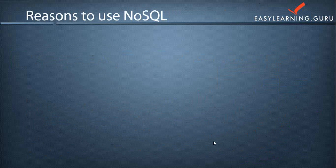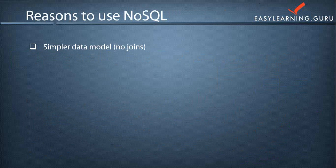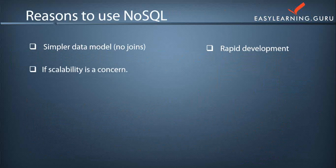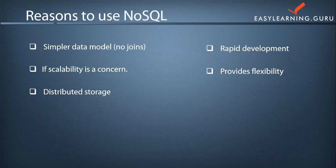There are various reasons why we use NoSQL. First, NoSQL provides a simpler data model — you do not have to use concepts like joins; instead, it encourages embedding and indexing data. It also helps developers provide rapid development for their applications, and it provides high scalability through scaling out. It offers high flexibility, meaning you can add any type of data into your database. It also provides distributed storage, meaning your data can be present on multiple servers, which helps provide high availability.